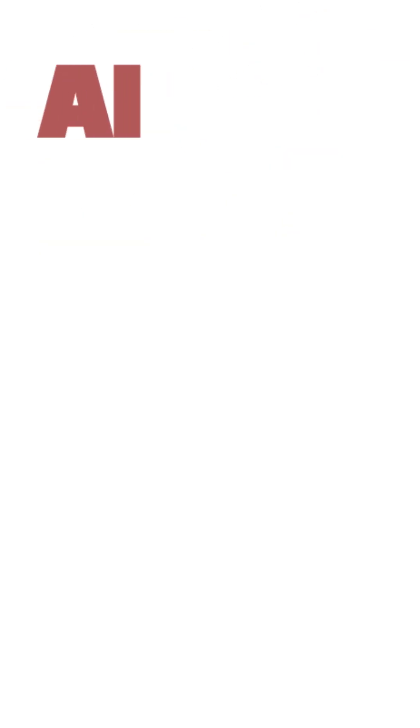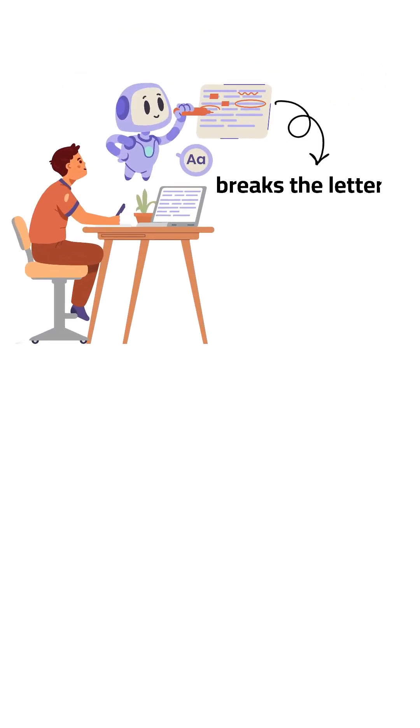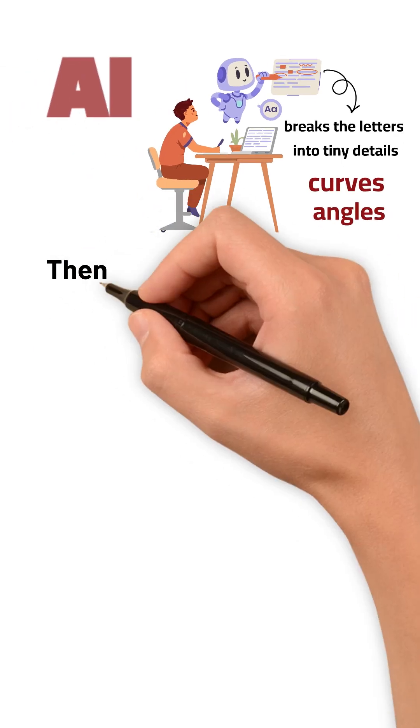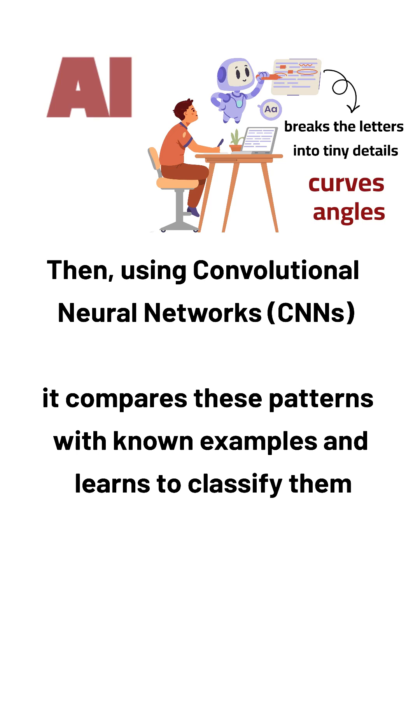For example, how does AI recognize handwriting? It first breaks the letters into tiny details like curves and angles. Then using convolutional neural networks, CNNs, it compares these patterns with known examples and learns to classify them correctly.